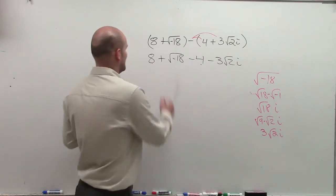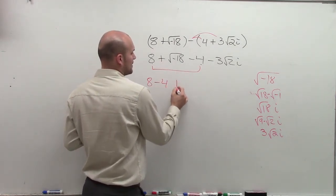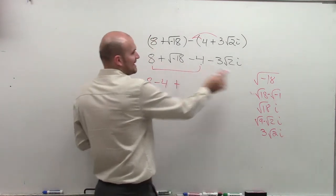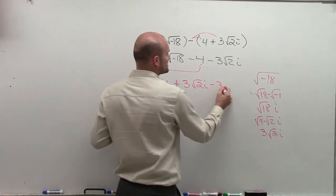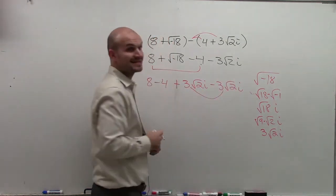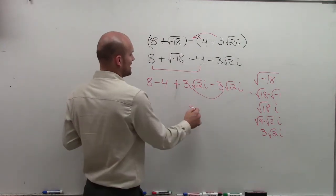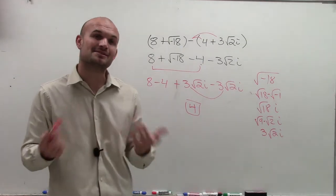So now what I can do is I can combine my like terms. So I have 8 minus 4 plus 3 square root of 2i minus 3 square root of 2i. Well, those are going to cancel out. And I'm just left with 8 minus 4, which is 4. So there you go, ladies and gentlemen. That's my simplified version.